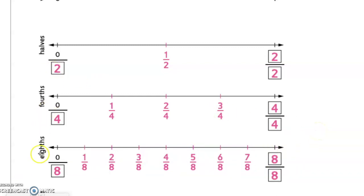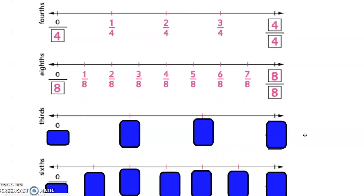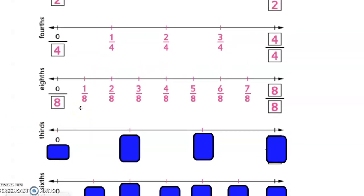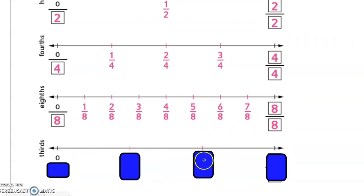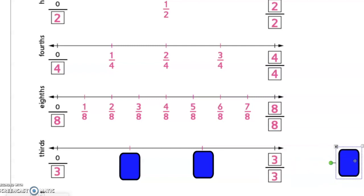Halves, fourths, and eighths all go together because you can see there are equivalent fractions. Now moving into thirds and sixths — thirds do not have any fractions equivalent to eighths, fourths, or halves. It's important to know that as we work with thirds, none of these fractions are going to line up with our number lines above. So our denominator is three, we have zero-thirds, three-thirds is equivalent to one whole. We don't have a fraction equivalent to one-half, but we have one-third and two-thirds.